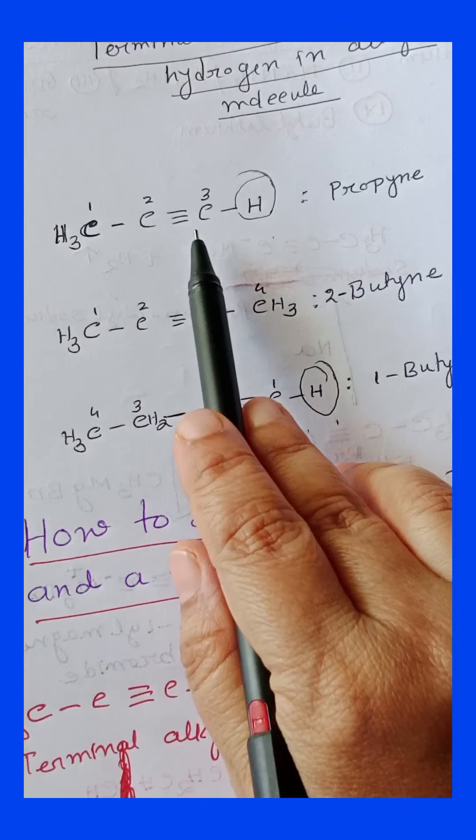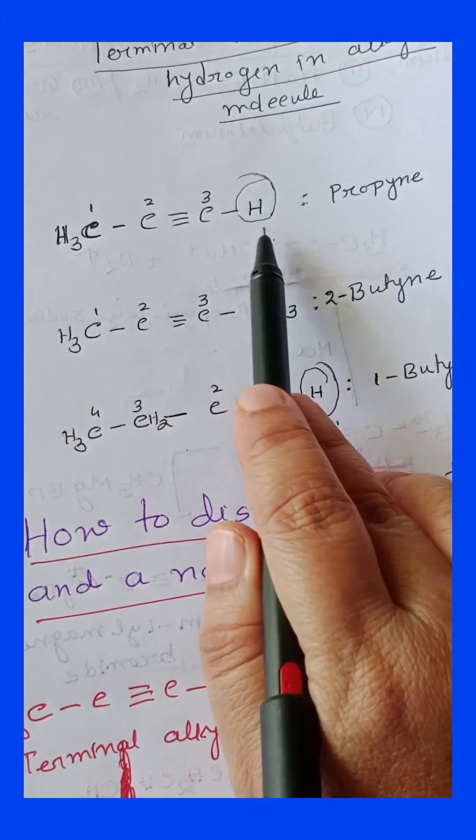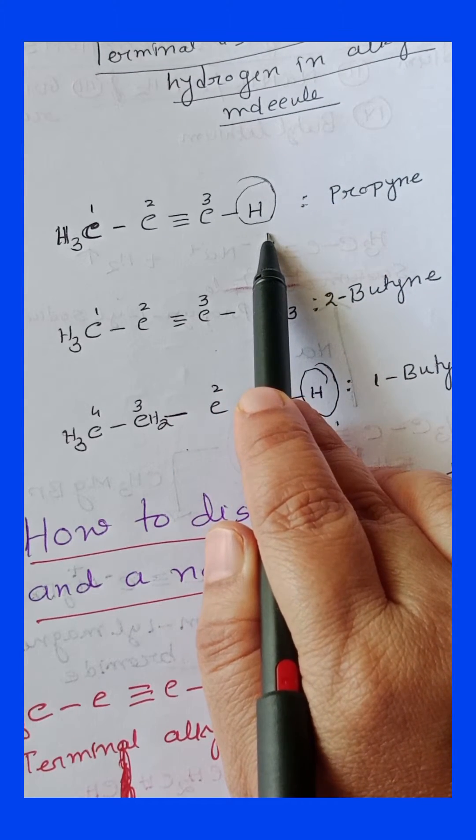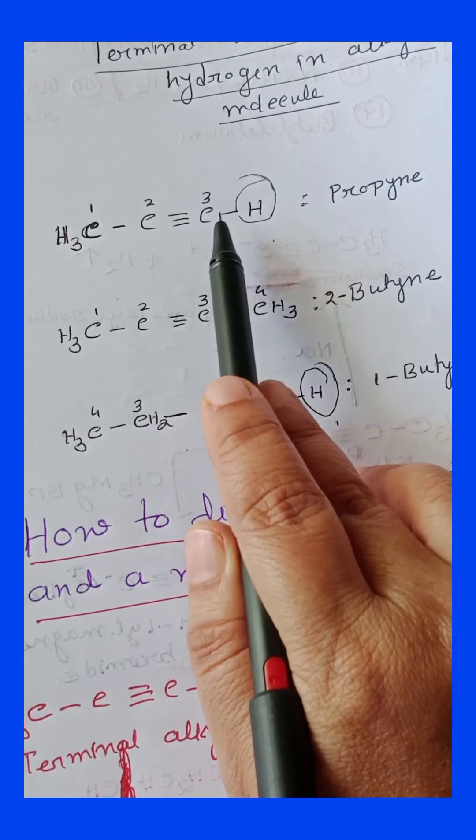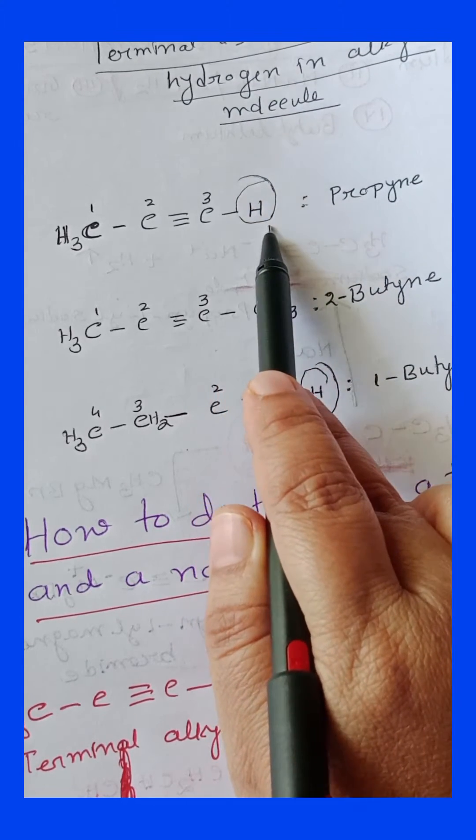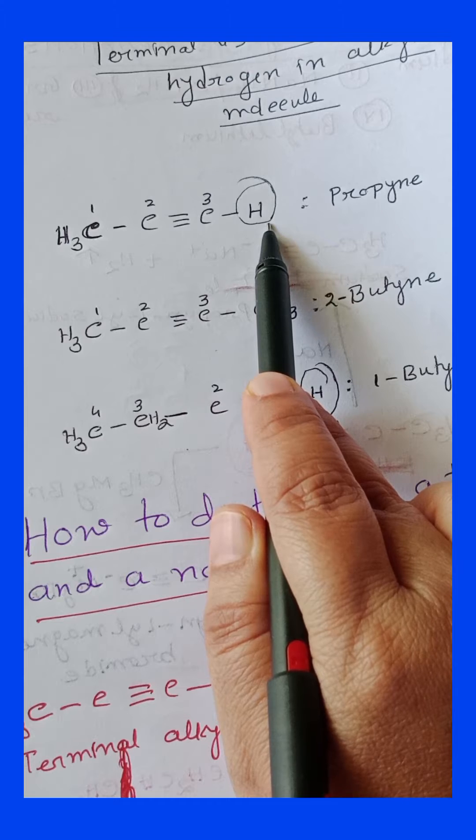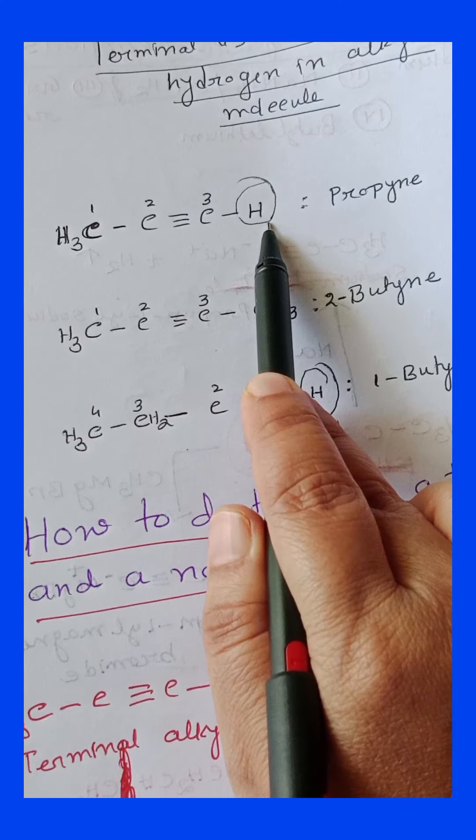Terminal alkyne means the alkyne has one hydrogen at the end of the molecule. Like here you can see it's propyne. So propyne, you can see one hydrogen is at the end of the molecule, so it is called terminal alkyne.